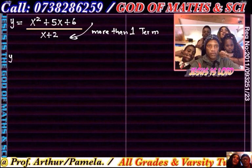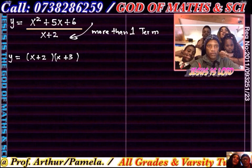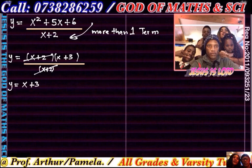So you don't split it like before — you factorize. You know that x plus 2 must be there. The factors of 6 are 2 and 3, so the other factor will be x plus 3. At the bottom you have x plus 2, which cancels with the top. So the equation becomes y equals x plus 3. Taking the derivative, dy/dx is just 1.